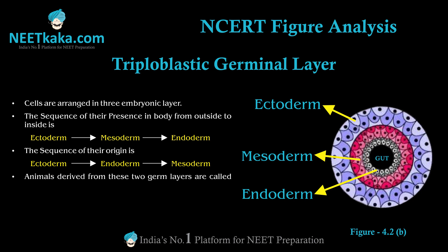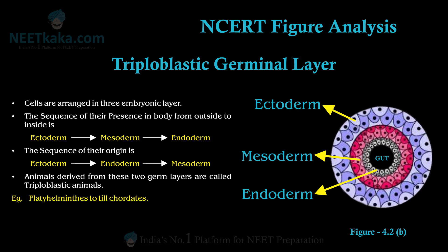Animals derived from these three germ layers are called triploblastic, and the examples are members of phylum Platyhelminthes to Chordata. Thank you.